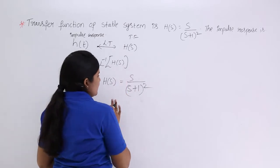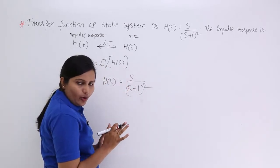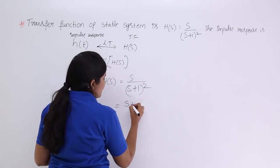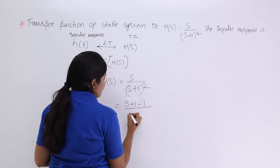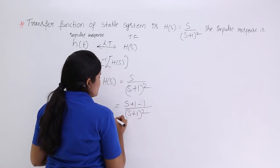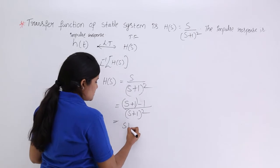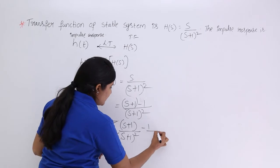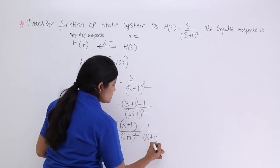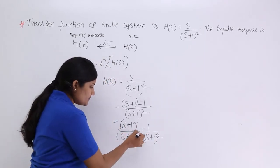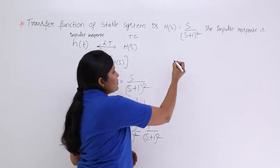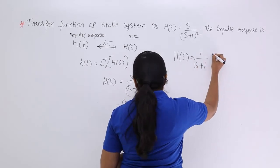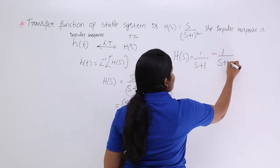To make this equation in proper form to apply the inverse Laplace transform, I write the numerator s as (s+1) - 1, keeping the denominator (s+1)². Separating the terms: (s+1)/(s+1)² minus 1/(s+1)². The (s+1) terms cancel in the first fraction, so H(s) = 1/(s+1) - 1/(s+1)².